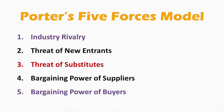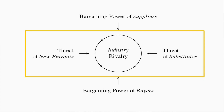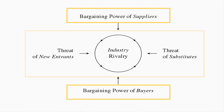Let's check out these five forces. The five forces are: industry rivalry, threat of new entrants, threat of substitutes, bargaining power of suppliers, and bargaining power of buyers. Porter's Five Forces include three forces from horizontal competition — the threat of substitute products or services, the threat of established rivals, and the threat of new entrants — and two others from vertical competition: the bargaining power of suppliers and the bargaining power of customers.